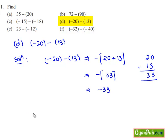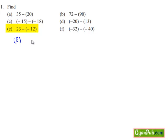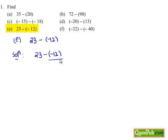By eliminating the brackets, we get minus 33. So the solution of minus 20 minus 13 is equal to minus 33. Taking down part e: 23 minus of minus 12. Here we are subtracting a negative integer. When we subtract a negative integer, we get a greater integer.